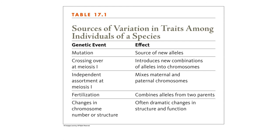There are different sources of variation in traits among individuals. Mutations are the ultimate source of variation — they create new alleles and new proteins, and can be negative, neutral/silent, or positive. Crossing over is a big source of variation, as are independent assortment, fertilization, and changes in chromosome number or structure. Changes in chromosome number mainly happen in plants, as in many animals changing chromosome numbers causes major issues.